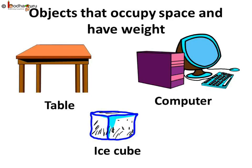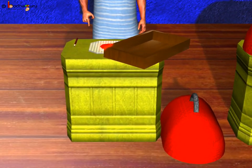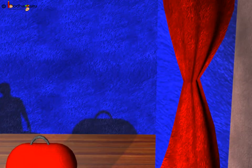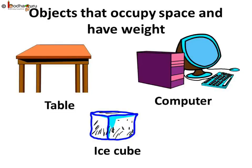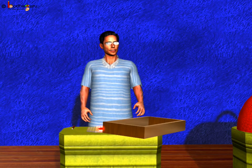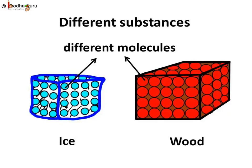Whatever objects you see in this theater, all occupy space and have some weight. For instance, this table takes some space and has some weight. So is this curtain. All objects that take up space and have weight are made of matter, whether it is this table, this curtain, or the ice I showed earlier. All of them look and feel different, because matter is made of very, very tiny particles called molecules. And molecules of different substances are different. For example, the molecules inside this wooden table are different from those of the ice.